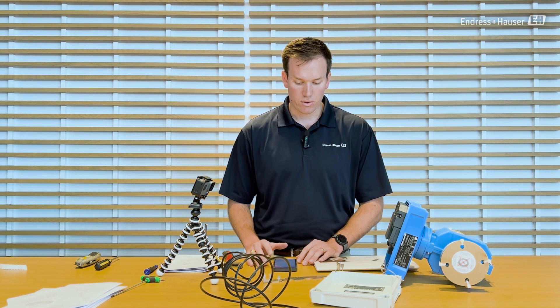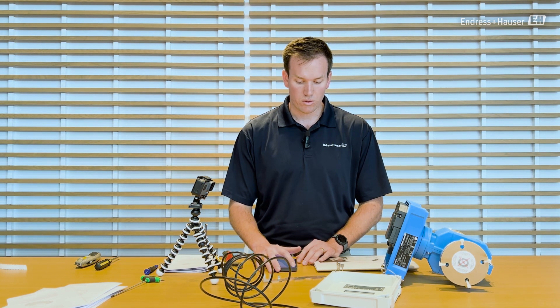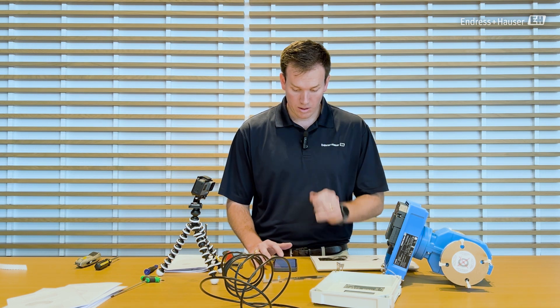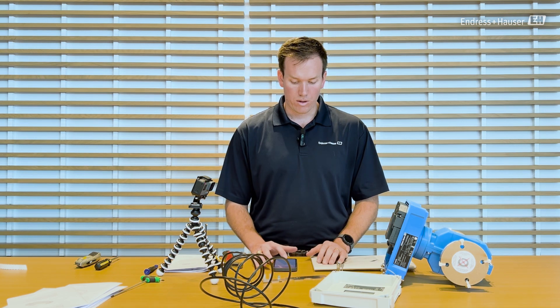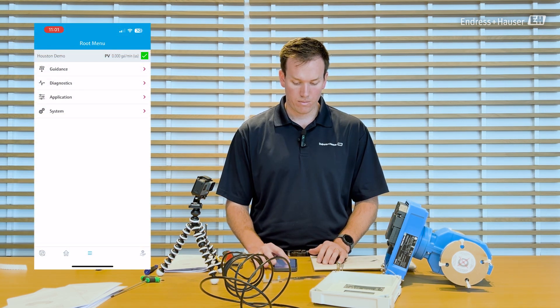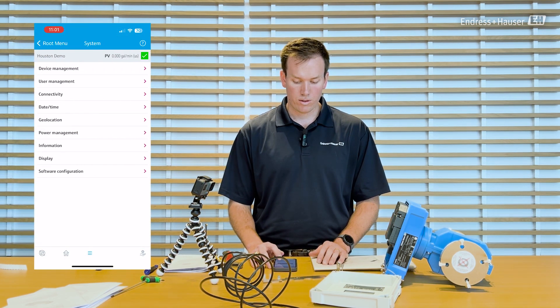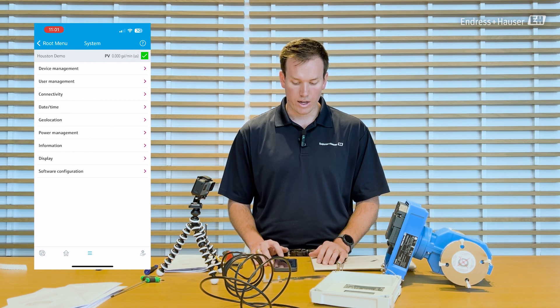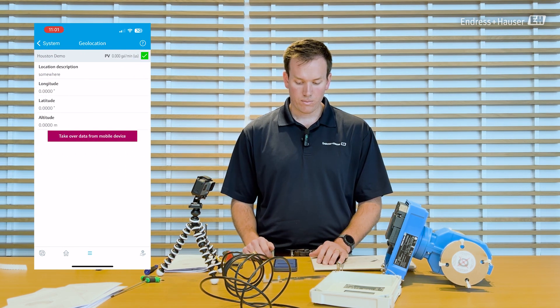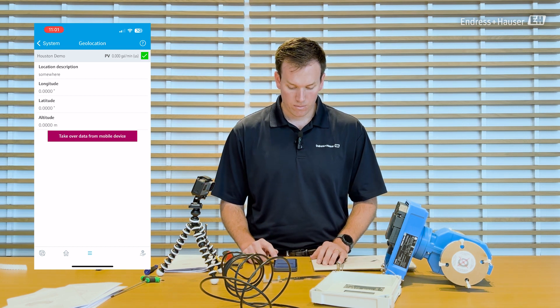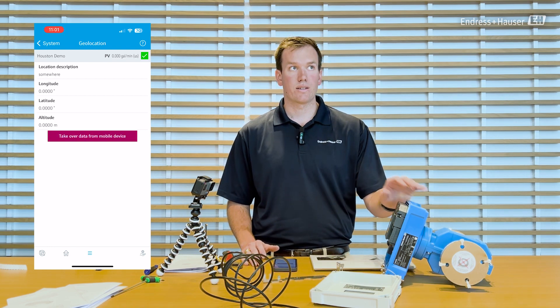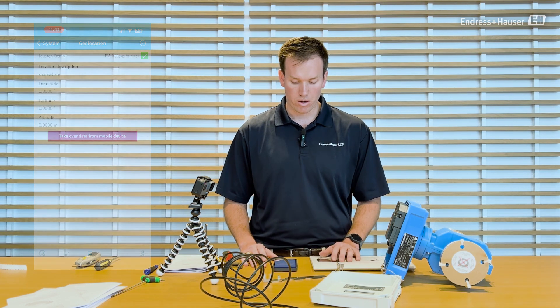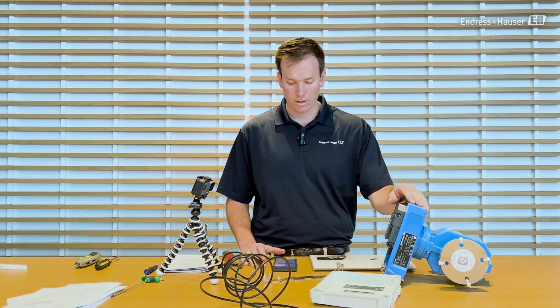The other thing I want to do is I want to set the geolocation of this device. So I'll go to the menu system geolocation and then take over the data from the mobile device. So I'm going to give it a moment to do that. And it now has the exact location where this meter is installed at our office in Houston, Texas.